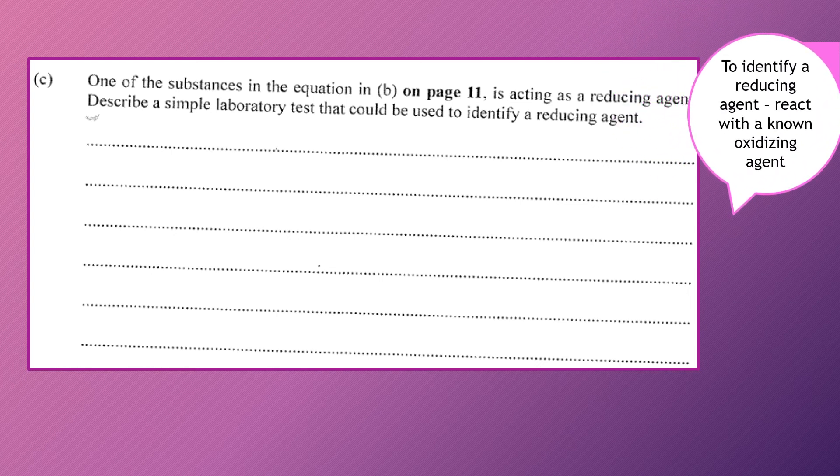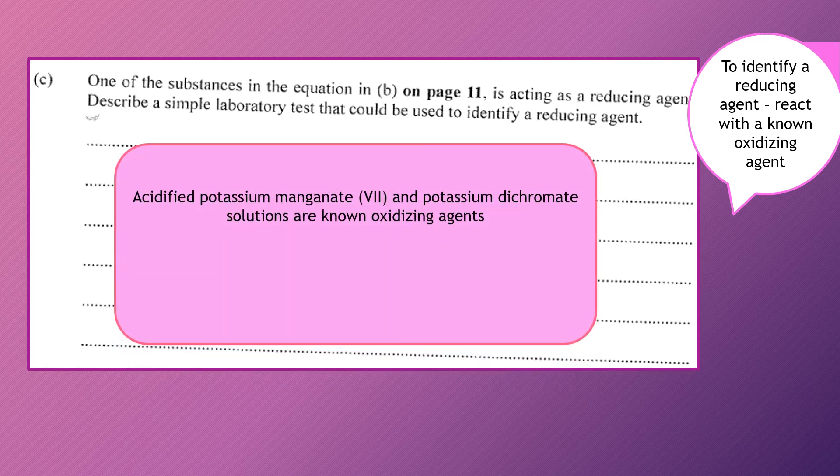That's right. If we want to find out if something is a reducing agent, we would normally react it with known oxidizing agents. So based on your experience in chemistry, what are some common oxidizing agents? Can you name any? Well, certainly acidified potassium manganate(VII) solution and acidified potassium dichromate solutions are known oxidizing agents.